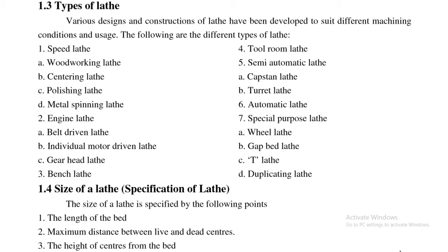Next is tool room lathe. Semi-automatic lathe, which has two types: capstan and turret lathe. Next, fully automatic lathe, and special purpose lathe including wheel lathe, gap head lathe, tee lathe, and duplicating lathe. These are the types of lathe we will discuss one by one.